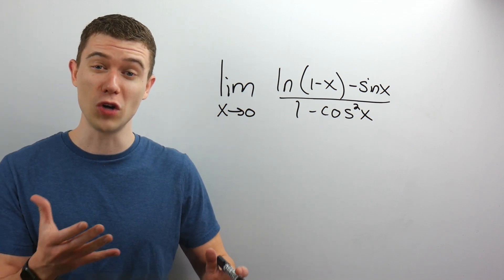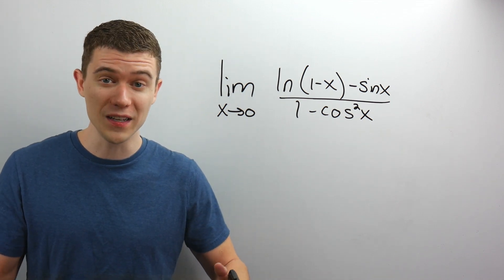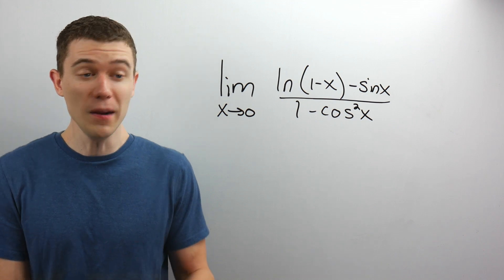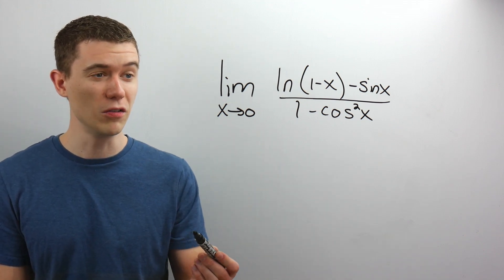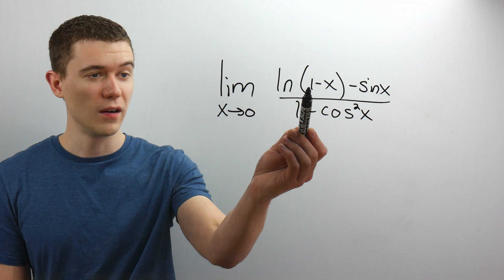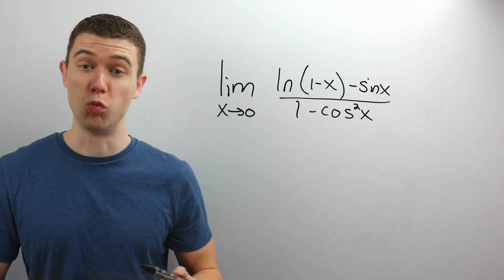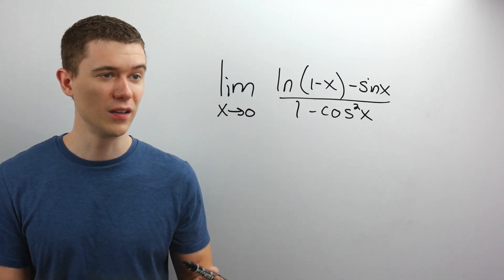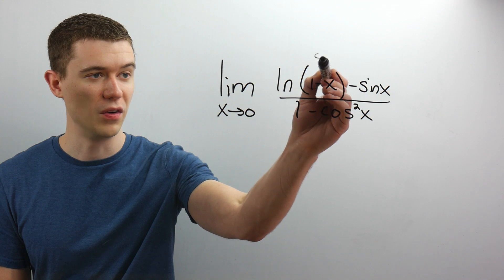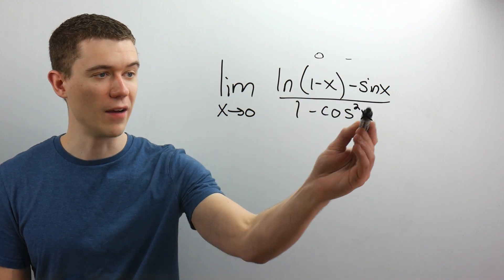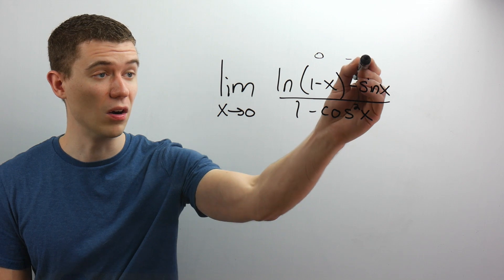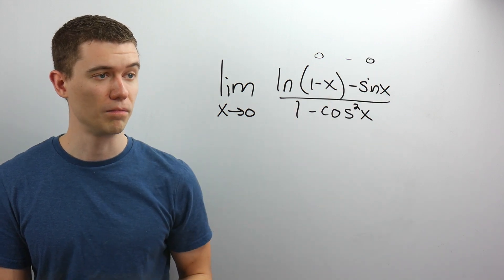Usually when you try to do limits, one of the first things you do is you just plug in, see what happens. And if I plug in x equals 0 here, well, we'd get 1 minus 0 is 1 inside this natural log. And the natural log of 1 is 0. And then we'd have minus sine of 0, which is 0.